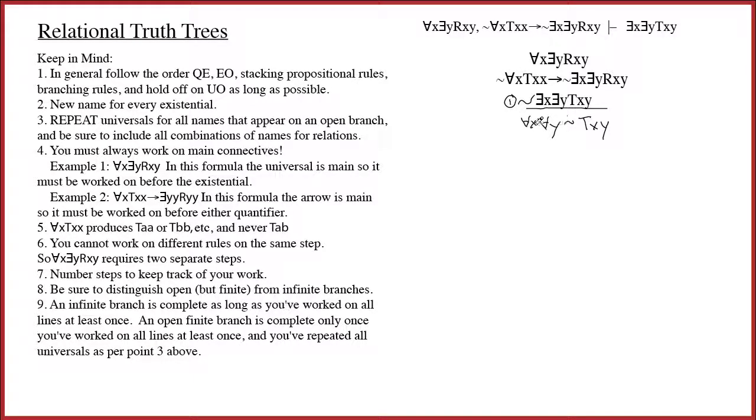Now notice I have got two universals, which I know I want to try to hold off on, and I have an arrow. Well I'm going to go ahead and do the arrow, even though that's branching, because I definitely want to hold off on the universals. And so on this side I'm going to negate the antecedent, so I'm going to just let myself ignore that tilde and write for all x, t, x, x.